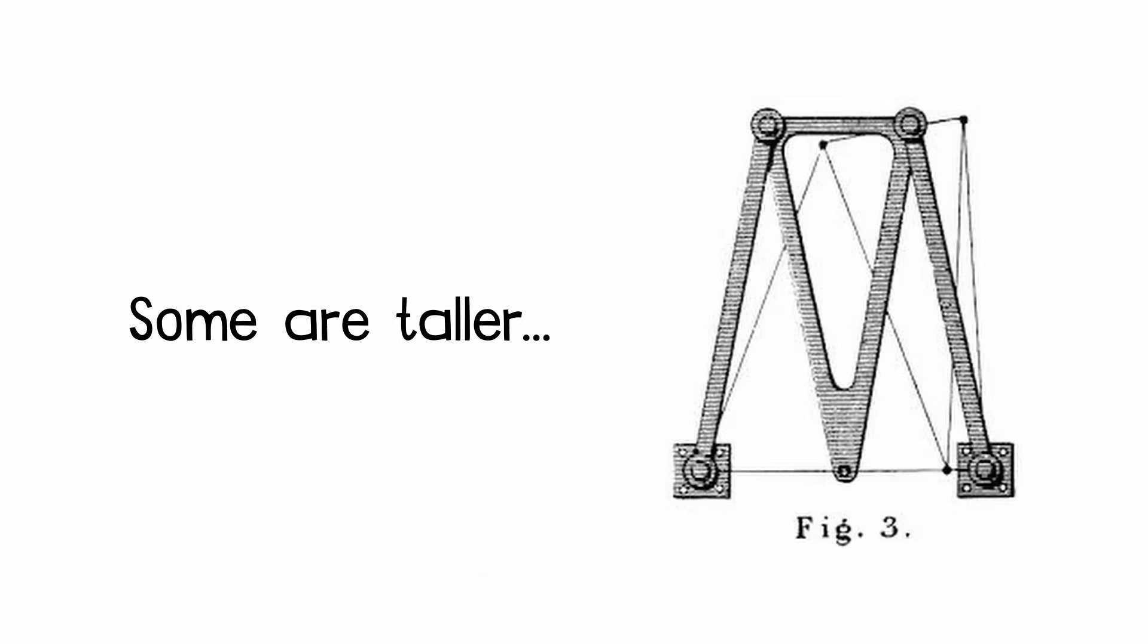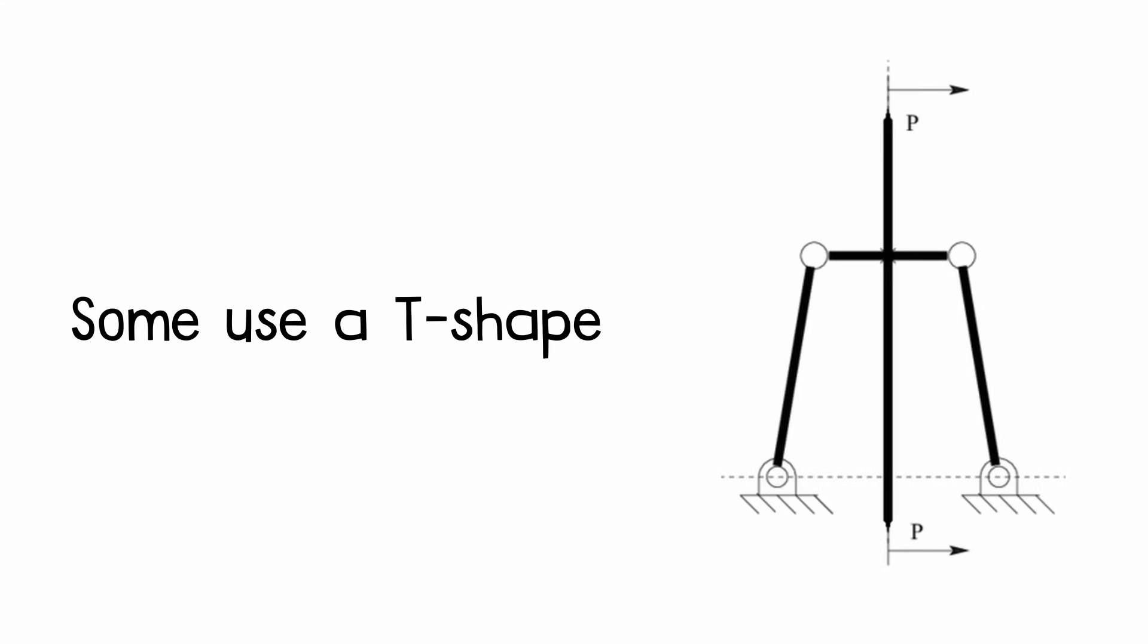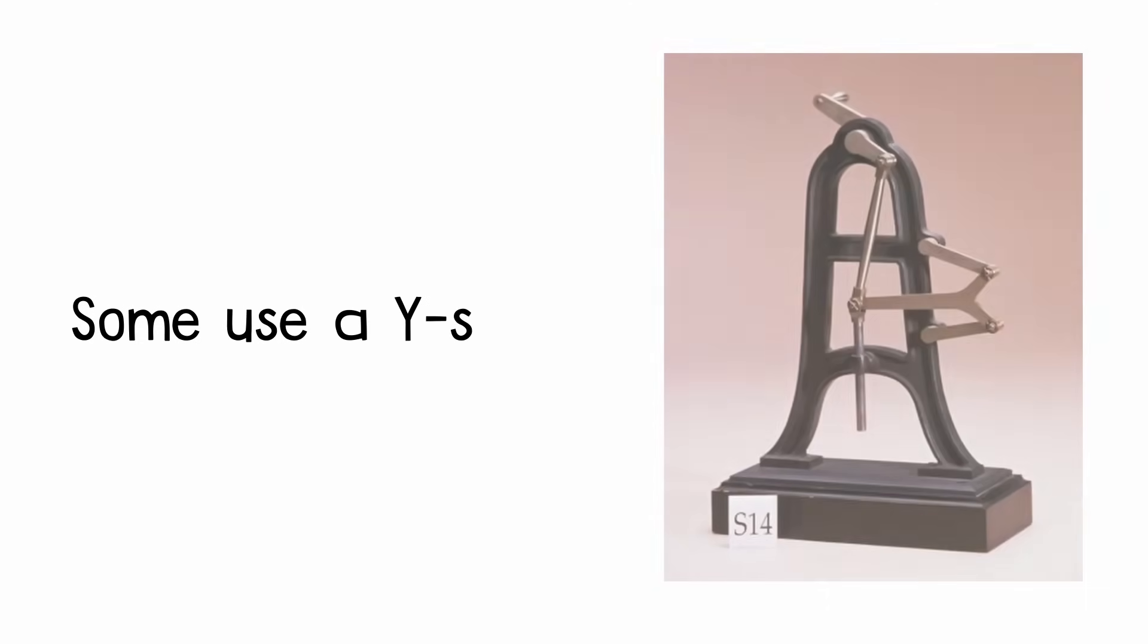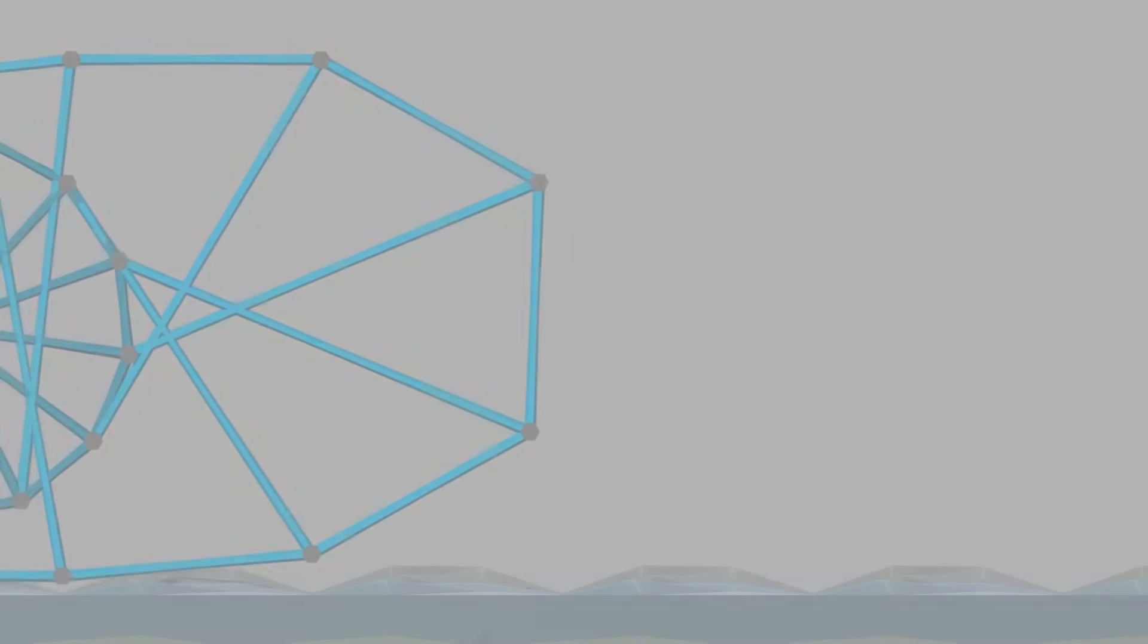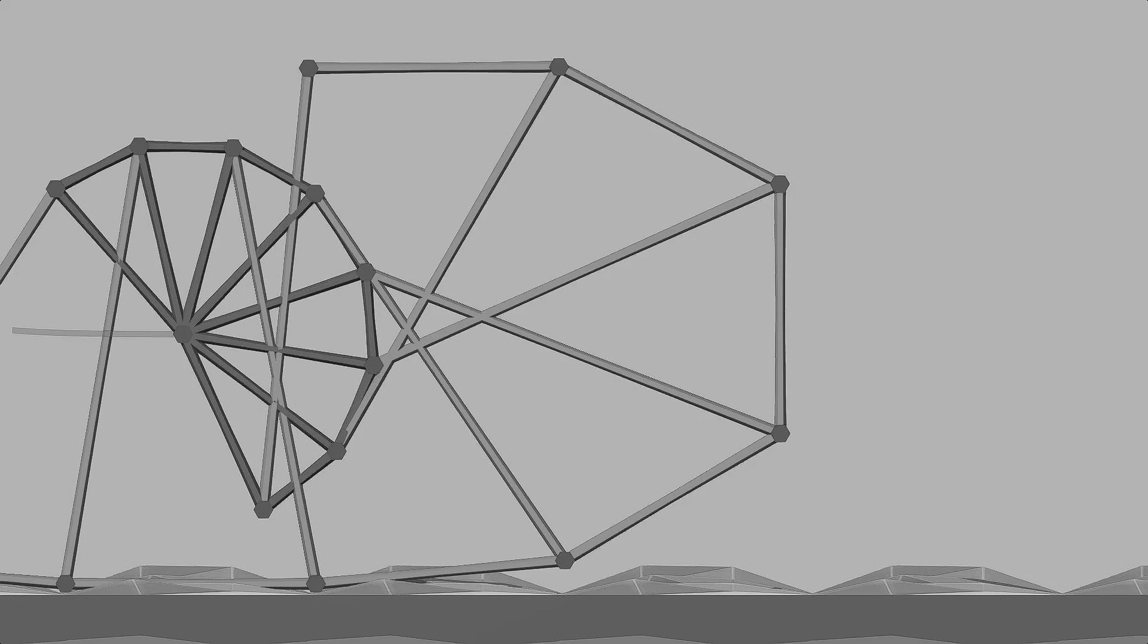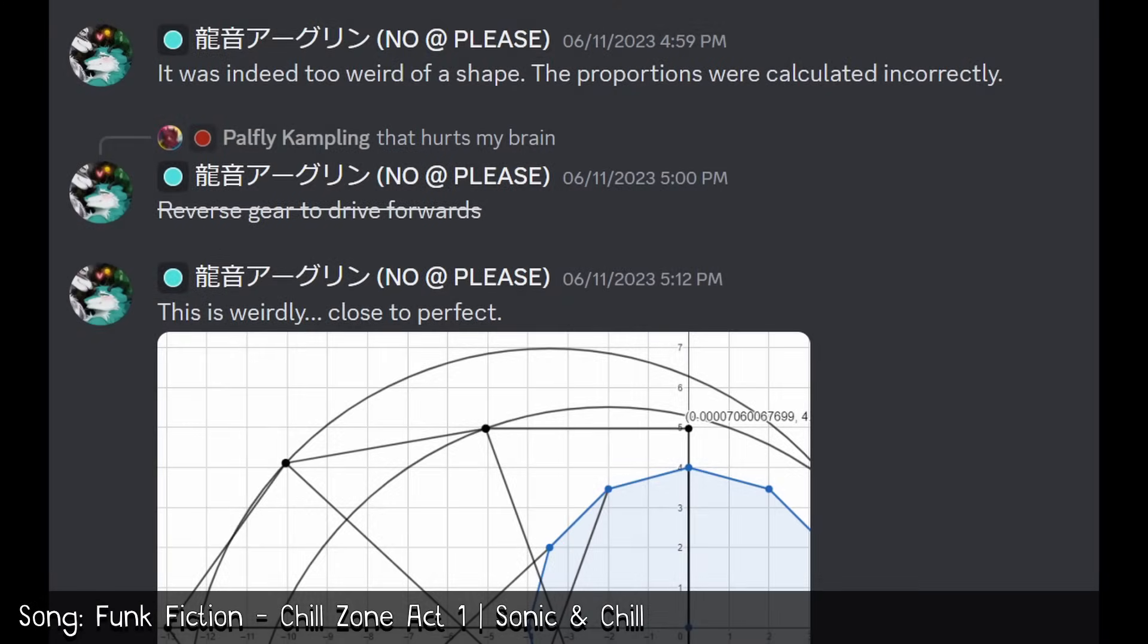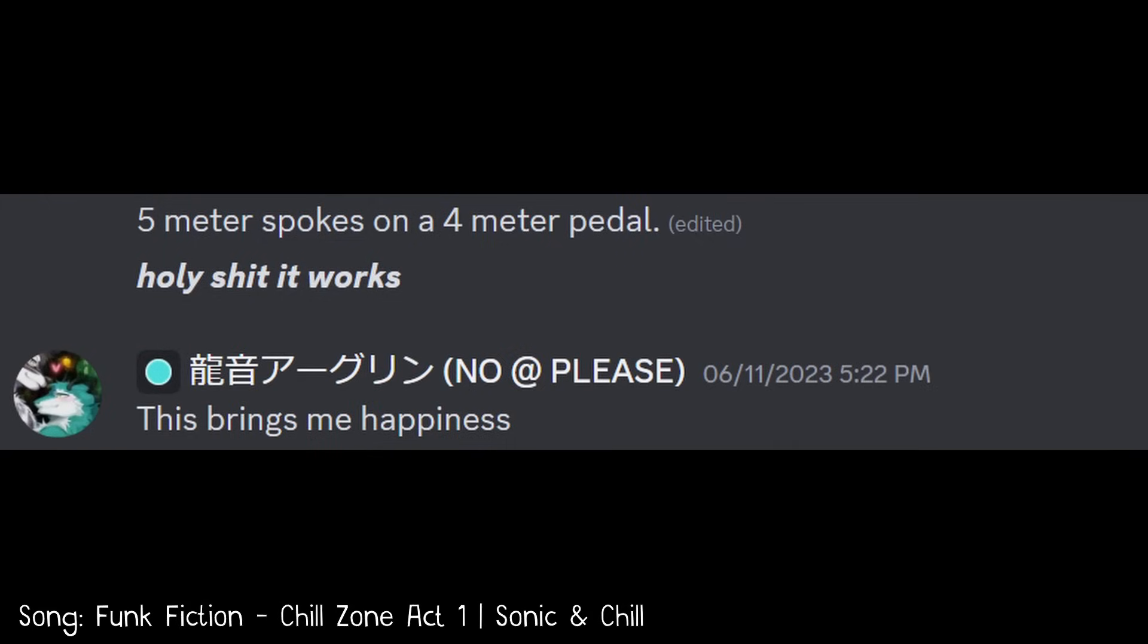However, unlike the Chebyshev linkage, the Roberts linkage doesn't have a unique set of predefined dimensions. So, I began with an arbitrary Roberts linkage. One critical factor to consider initially was ensuring that if I intended to chain these linkages together, the connecting bar needed to be less than twice the height of the entire apparatus. This adjustment was necessary to prevent the central engine from colliding with the ground. And, after some trial and error, I finally got it.